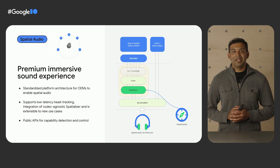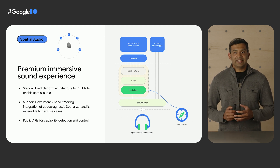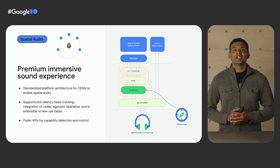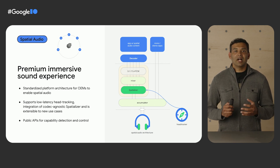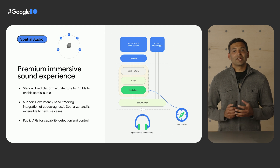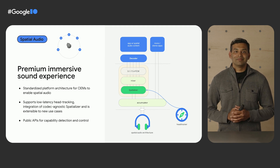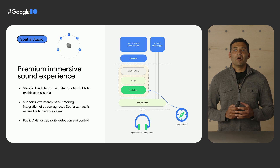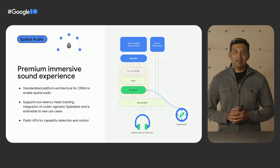Another premium feature we are excited to introduce is spatial audio. Following up on our announcement at CES, the Android Audio Framework is adding support for spatial audio. This includes both static spatial audio and dynamic spatial audio with head tracking. OEMs looking to enable this feature can take advantage of standardized platform architecture to integrate multi-channel codecs of their choice. The new architecture allows for lower latency head tracking and integration with the codec-agnostic spatializer, and also allows for extensibility to new use cases in the future. App developers will get public APIs for device capability detection and multi-channel audio control. We are working closely with content providers to ensure these APIs meet their needs.